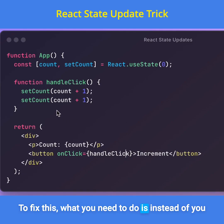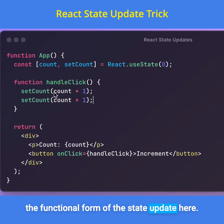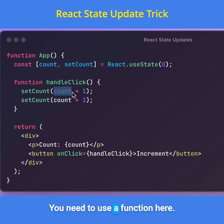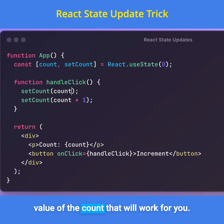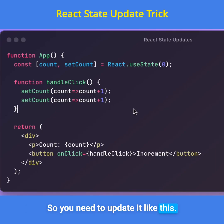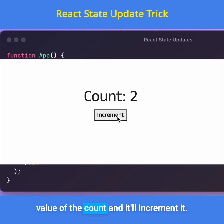To fix this, what you need to do is, instead of directly updating it like this, you need to use the functional form of the state update. Here you need to pass a function so that it always depends on the previous value of the count. You need to update it like this — it will always use the previous value of the count and increment it.